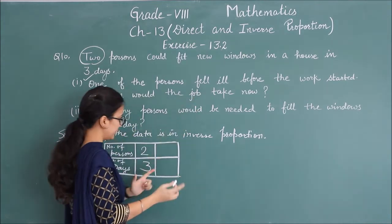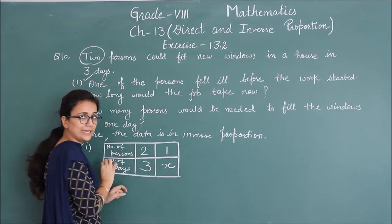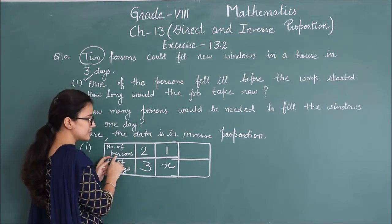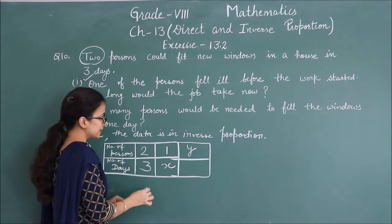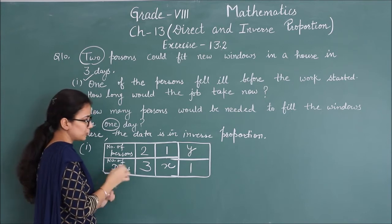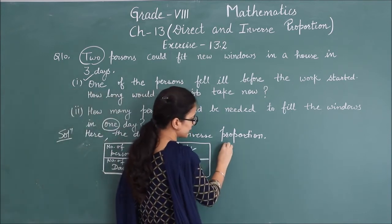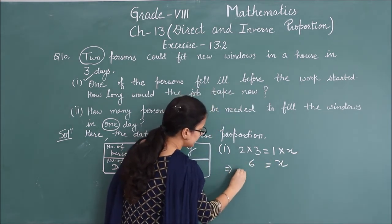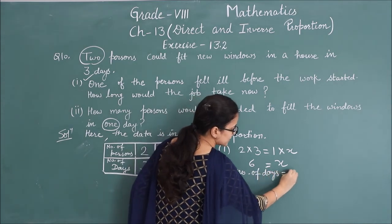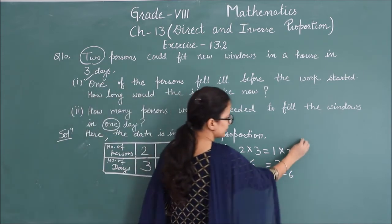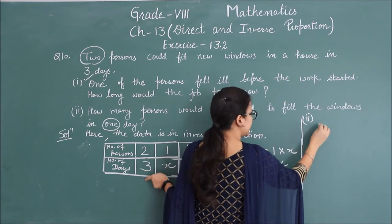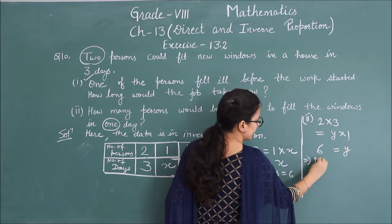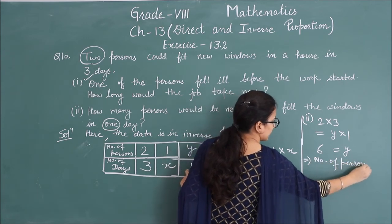For Part 1: one person fell ill, so number of persons = 1, and let days = x. For Part 2: we need to find how many persons, so let number of persons = y, and days = 1. Using inverse proportion: 2 × 3 = 1 × x, so x = 6. Number of days is equal to 6. For Part 2: 2 × 3 = y × 1, so y = 6. Number of persons is equal to 6.